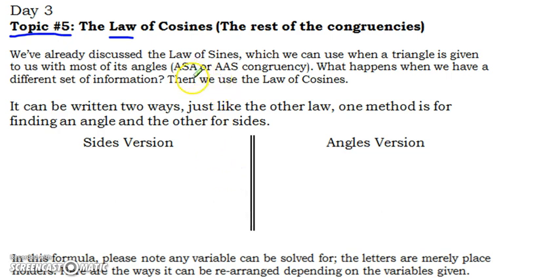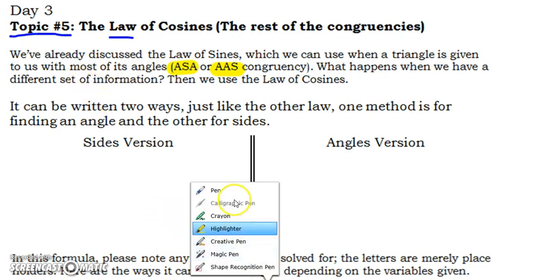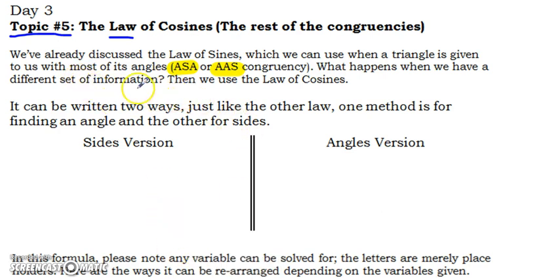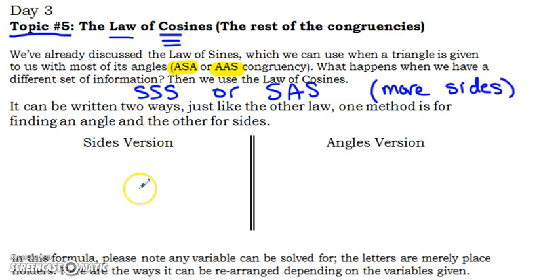If you remember, we've already discussed law of sines, which we would use when we have angle-side-angle or angle-angle-side congruency. So what happens when we have a different set of information? When you have more sides, you are going to use the law of cosines.